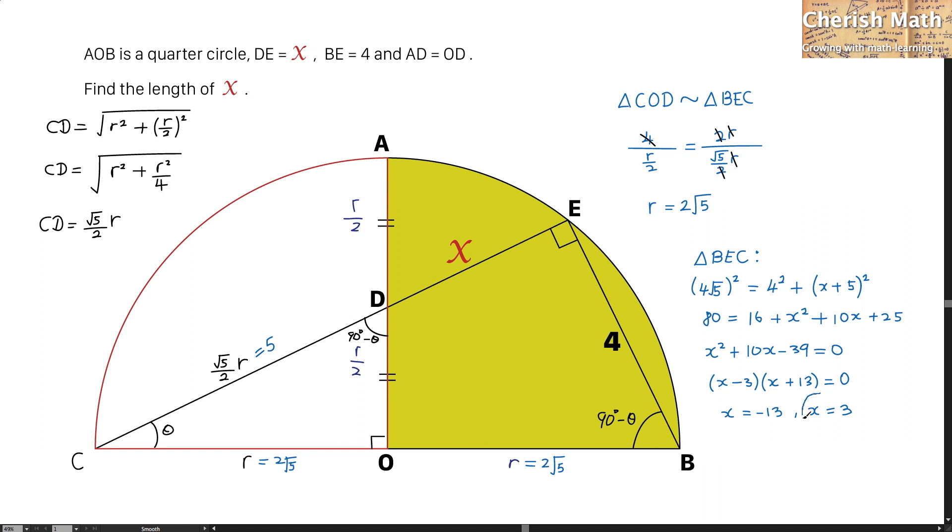The value that I'm going to pick up is X equal to 3 units, simply because the length doesn't exist in the form of negative. And I solved the puzzle. Thanks for watching, and please subscribe.